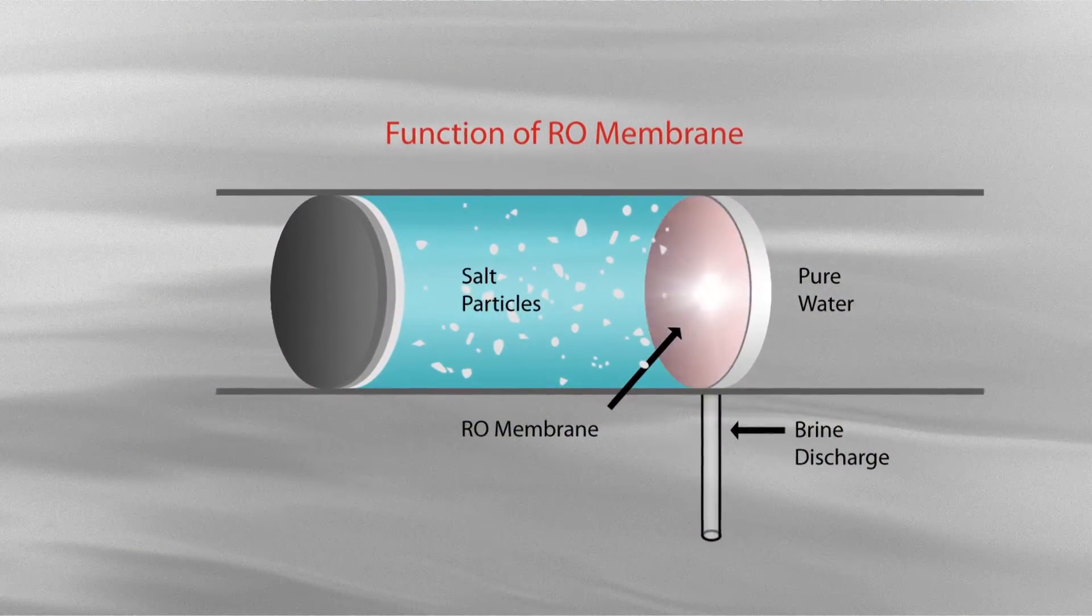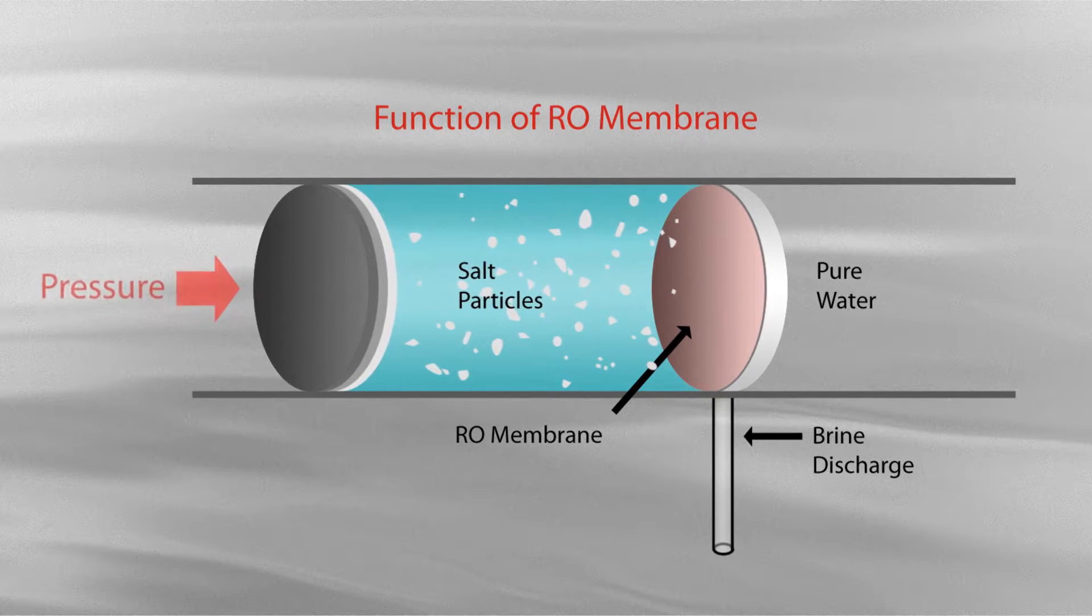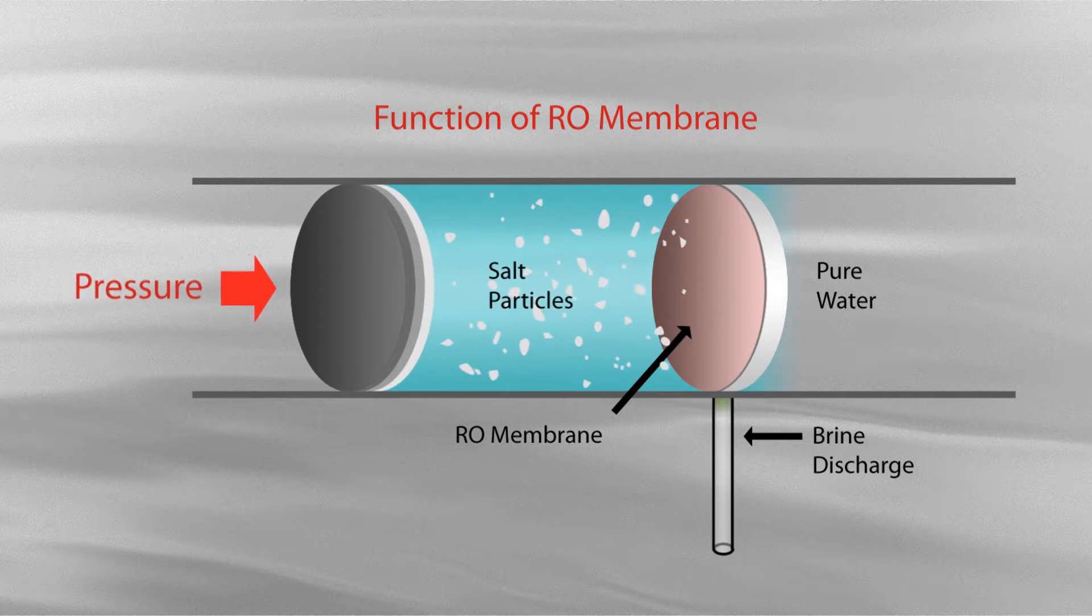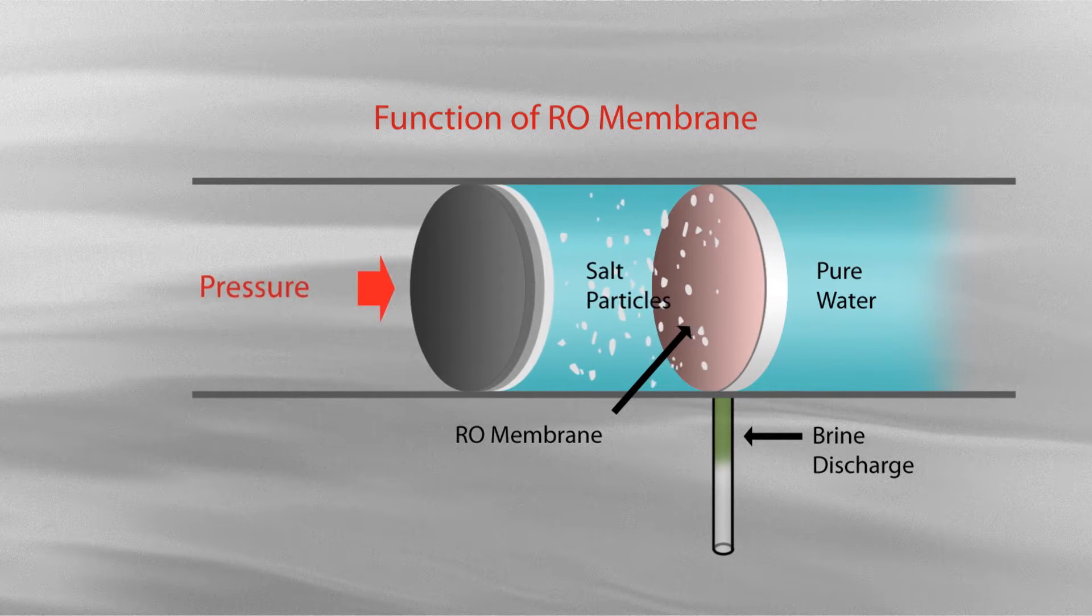Traditional reverse osmosis membranes for water desalination are coated with semi-permeable films that depend on high pressures to force water through. But significant energy is needed to produce these pressures.